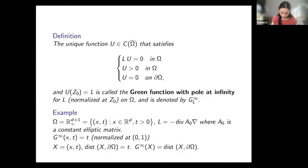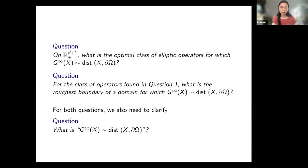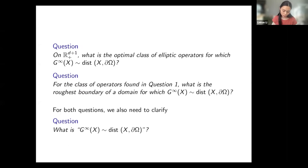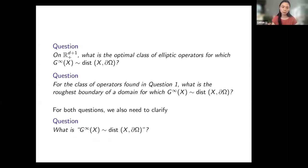We can ask two questions. First, on the upper half space, what is the optimal class of elliptic operators for which the Green function with pole at infinity behaves like the distance function? Second, for this class of operators, what is the roughest boundary of the domain for which the Green function still behaves like the distance function? For both questions, we need to clarify and quantify what we mean by the Green function behaving like the distance function.